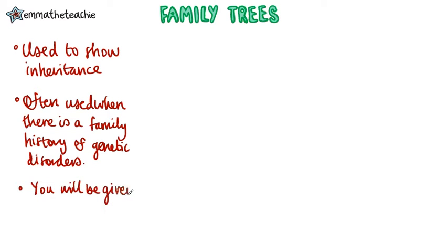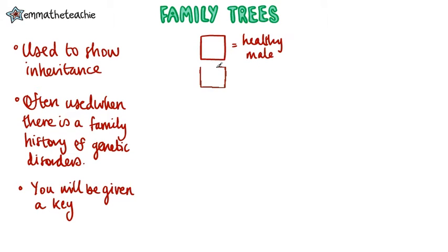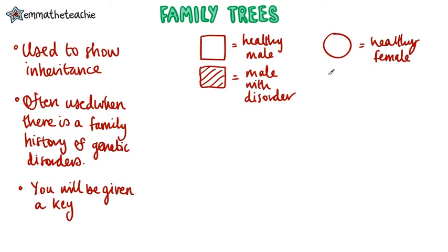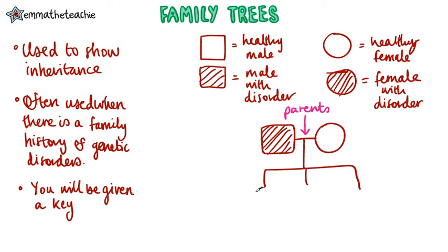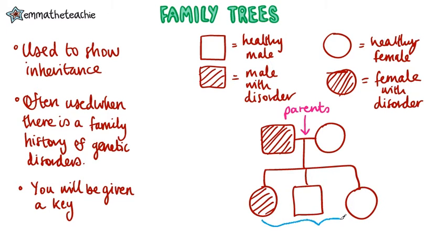You will be given a key to use to figure out some answers. Here's an example. Males and females will be given different shapes, and shading is then used to indicate if the person has got the disorder. So here we've got a man and a woman — when they're joined by a horizontal line, this means that they are parents.